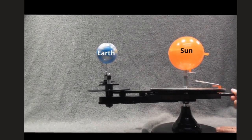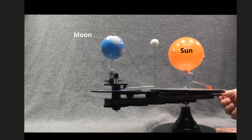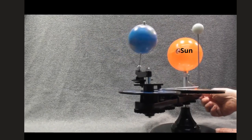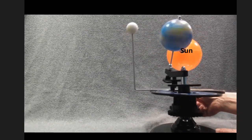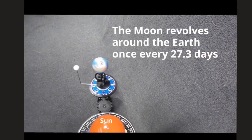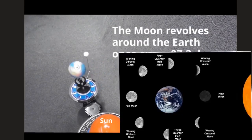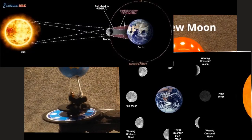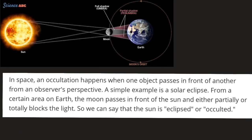The earth is revolving around the sun in an elliptical orbit and is also rotating on its own axis. Similarly, the moon rotates on its own axis and also revolves around the earth. It takes nearly 28 days to completely revolve around the earth and goes through 8 different phases. When the moon comes in between the sun and the earth, the solar eclipse event takes place. This event is also known as an occultation, which is an event that occurs when one object is hidden by another object that passes between it and the observer.